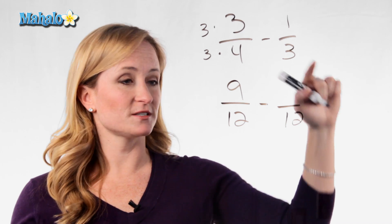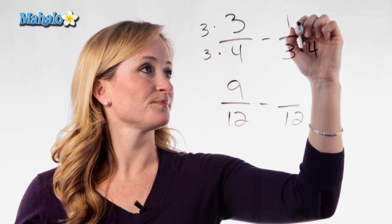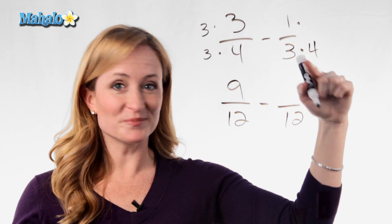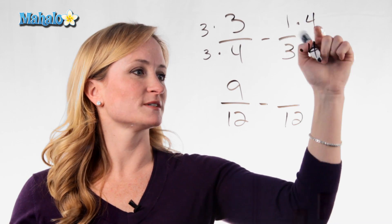How about this side? How did this 3 become a 12? We multiplied it by 4. And again, what you do to the bottom, you must do to the top. So 1 times 4 is 4.